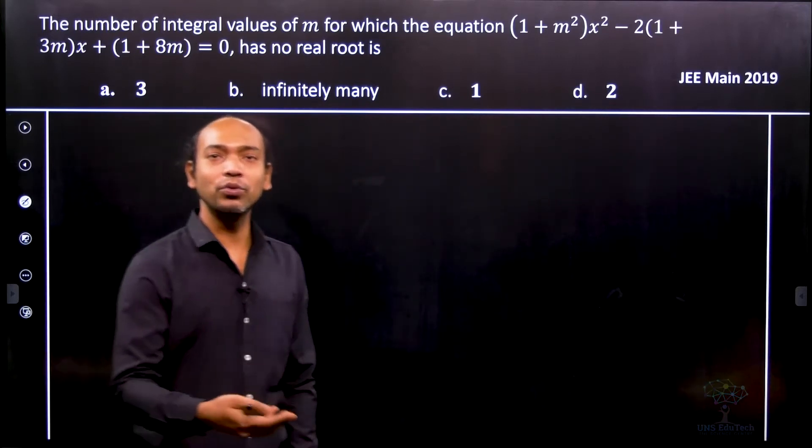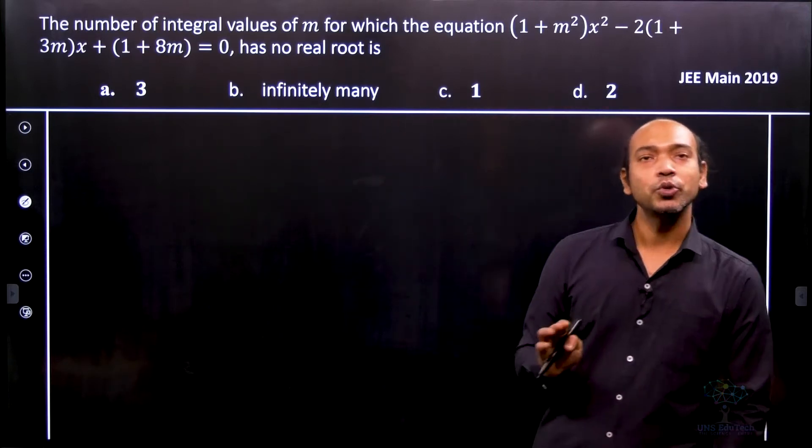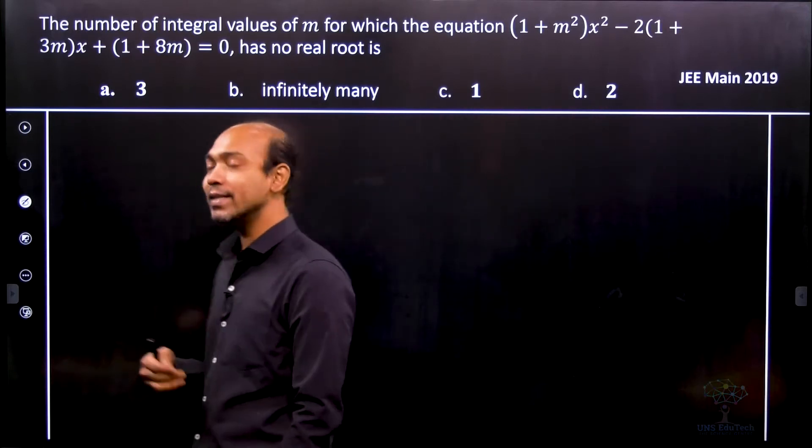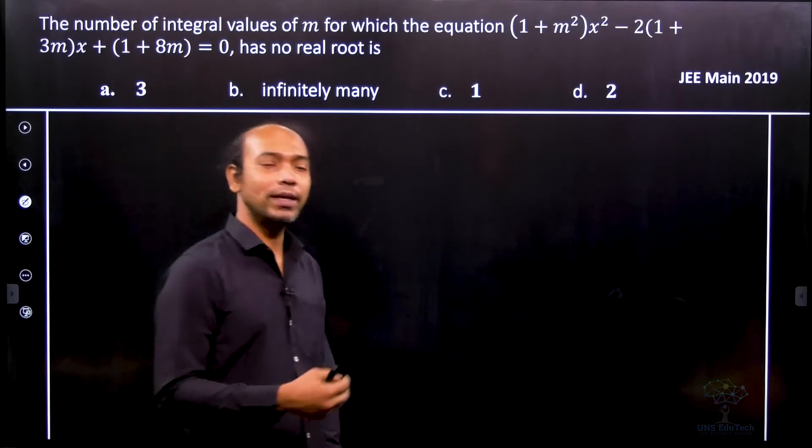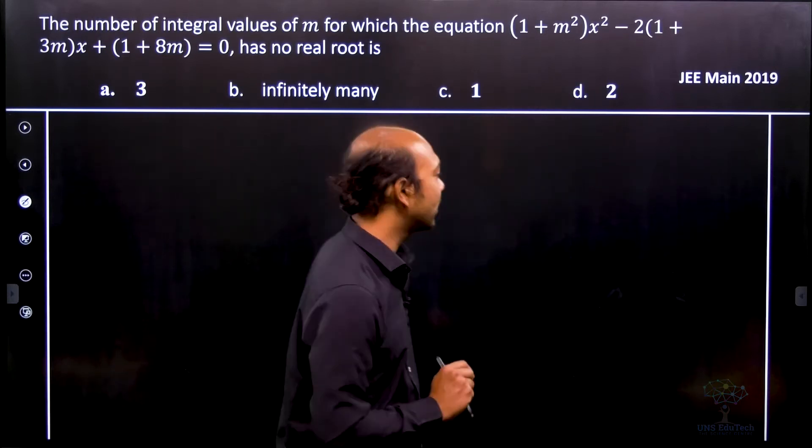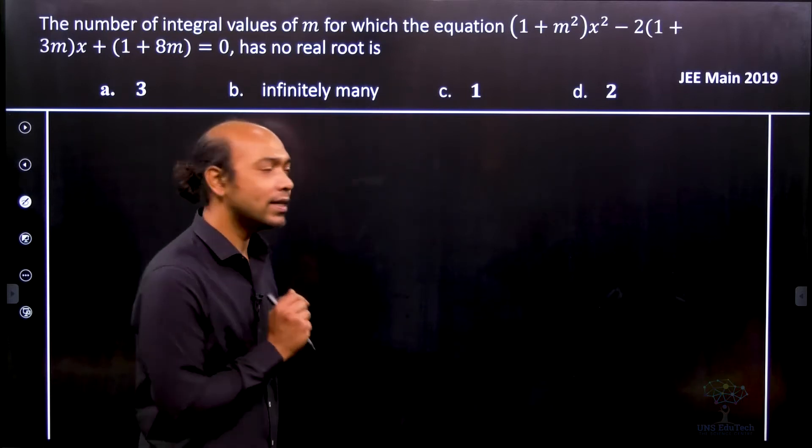The nature of the roots depends on the discriminant, so we have to calculate the discriminant. What is the discriminant? Discriminant is actually b² minus 4ac. So let us calculate the discriminant.